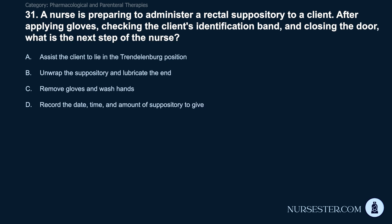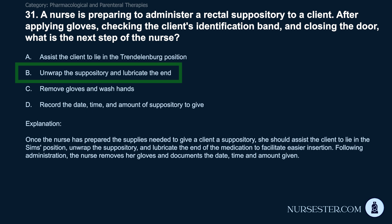Question 31: A nurse is preparing to administer a rectal suppository. After applying gloves, checking the client's ID band, and closing the door, what is the next step? A) Assist the client to the Trendelenburg position. B) Unwrap the suppository and lubricate the end. C) Remove gloves and wash hands. D) Record the date, time, and amount. Correct answer: B. Unwrap the suppository and lubricate the end. Once supplies are prepared, the nurse should assist the client to the Sims position, unwrap the suppository, and lubricate the end to facilitate easier insertion. Following administration, the nurse removes gloves and documents the date, time, and amount given.